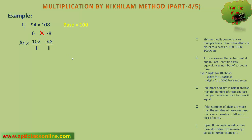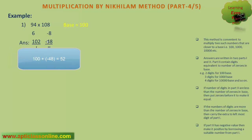We know that the second part cannot be a negative value, as we see in the rule written on the side of your screen. If part 2 contains a negative value, then to make it positive, we have to borrow a suitable number from part 1. The one number borrowed from part 1 becomes 100 for part 2, because part 1 has 100 times the value of part 2. So after borrowing one number from part 1, the value of part 2 will become 52, because when 100 is added to minus 48, it becomes 52. And after giving one number, the value of part 1 will become 101.